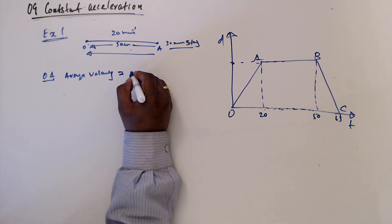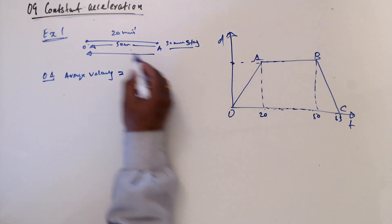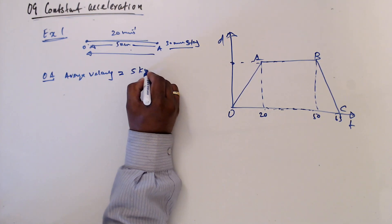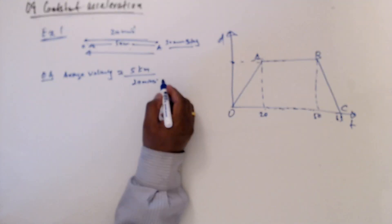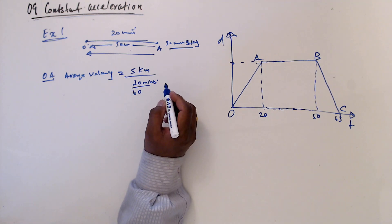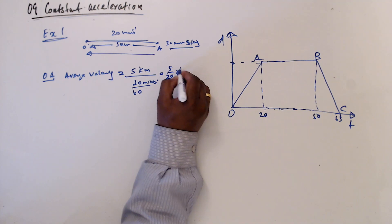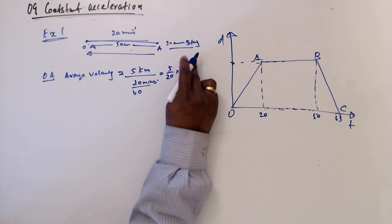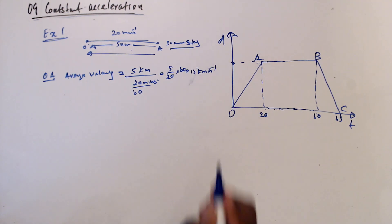From O to A, the displacement is 5 kilometers, divided by 20 minutes. To convert to kilometers per hour, divide by 60: 5 over 20 times 60, which equals 15 kilometers per hour.